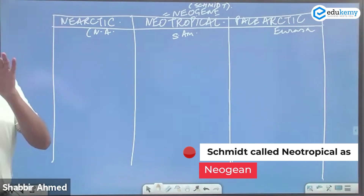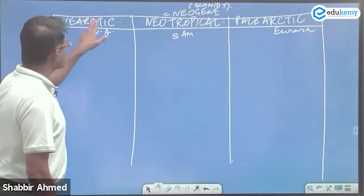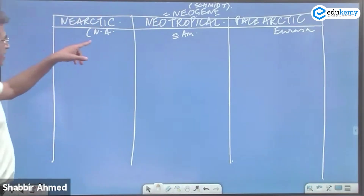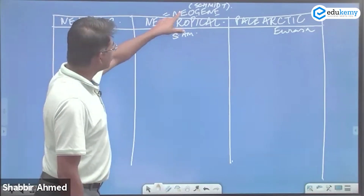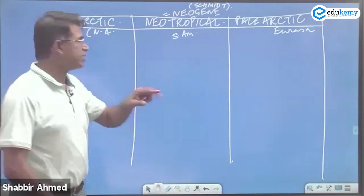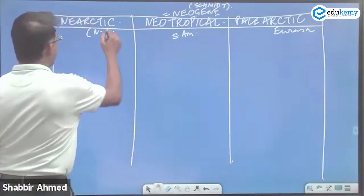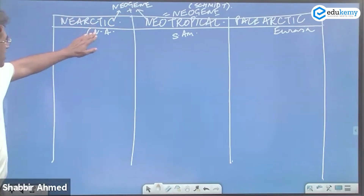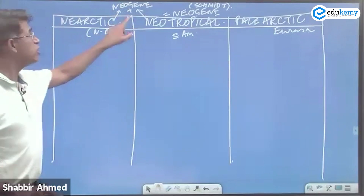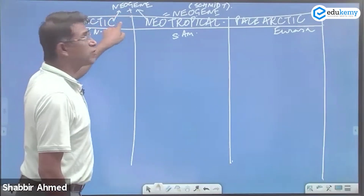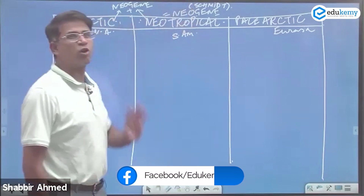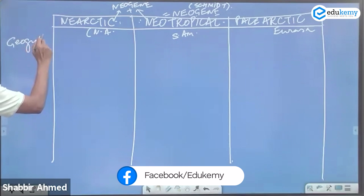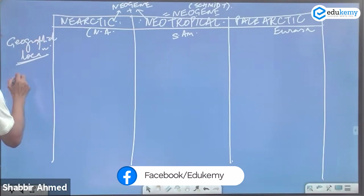Neotropical is also called Neogean — a term used by Schmidt. Some other scholars have called Nearctic and Neotropical together as Neogean. So the term Neogean can be used for Neotropical alone, or for Nearctic and Neotropical together. For each realm, talk about geographical location, fishes, reptiles, birds, and mammals.